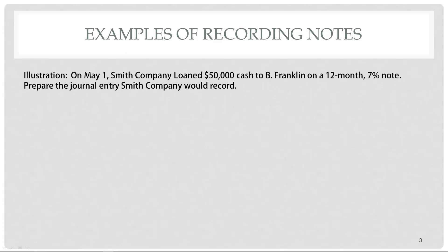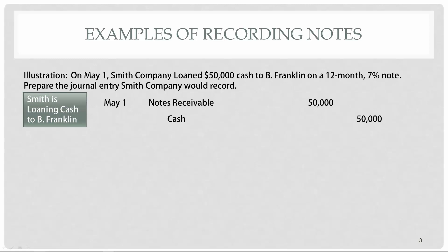Let's look at some examples of recording notes. On May 1, Smith Company loaned $50,000 cash to B. Franklin on a 12-month, 7% note. Smith is loaning cash to B. Franklin, so Smith Company would debit notes receivable and credit cash. In 12 months, Franklin Company is going to pay them back that $50,000 plus the interest.